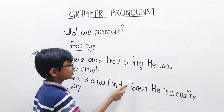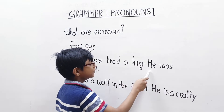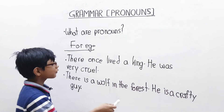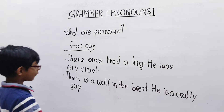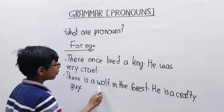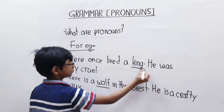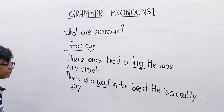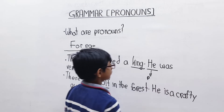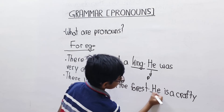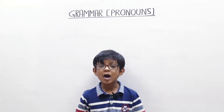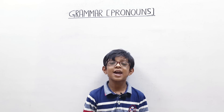There once lived a king. He was very cruel. He is a pronoun. And here also, he is a pronoun. We will learn more about pronouns in part two. Please subscribe to my channel and thank you for watching.